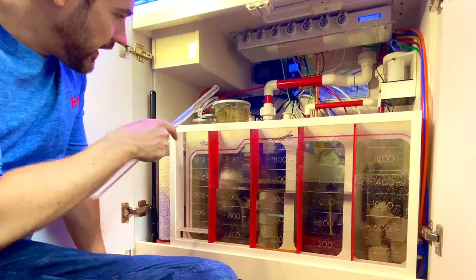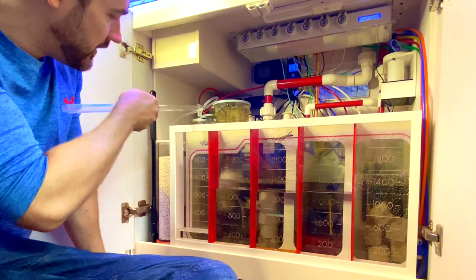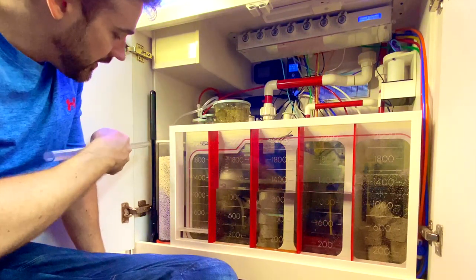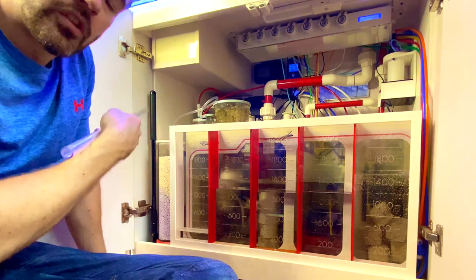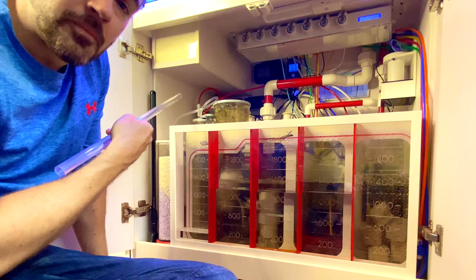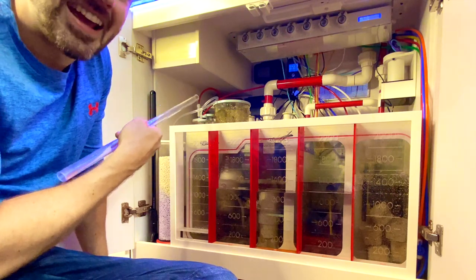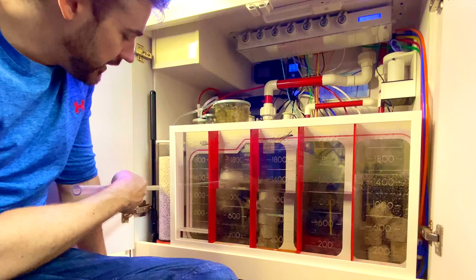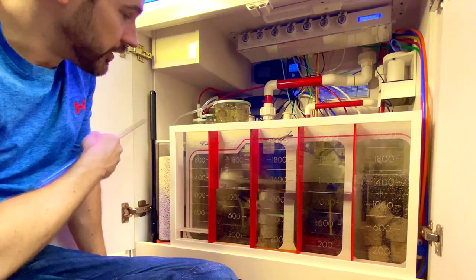And the way this works is the air intake for the skimmer here sucks air through this reactor, which scrubs out the CO2. So the skimmer is essentially supercharging the water with hyper-oxygenated air because it's pulling all the carbon dioxide out of the air on that air intake for the skimmer.